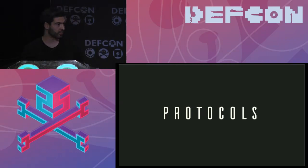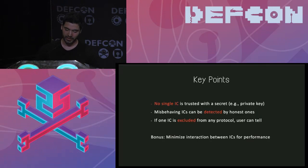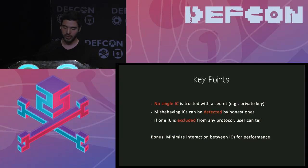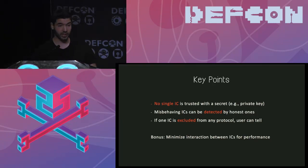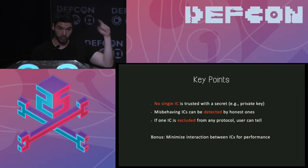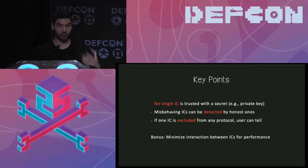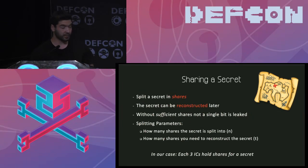A bit about the magic behind the scenes — kept extremely light on mathematics. There are three plus one key points we wanted for each algorithm. First, there must be no single processor handling sensitive material such as secret keys at any time. Second, if one processor is misbehaving and actively attacking others, honest processors can detect that. Third, if one honest processor is excluded from the protocol execution, the user can tell this happened. Finally, performance must be good — which we achieved.